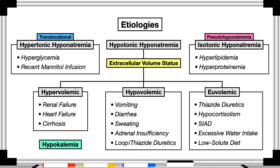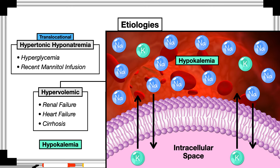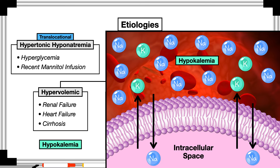One honorable mention that doesn't fit neatly into any category is hypokalemia. Hypokalemia can contribute to hyponatremia because a drop in serum potassium will pull intracellular potassium into the intravascular space in exchange for sodium. So sodium is lost to the intracellular space, driving the serum sodium level down.